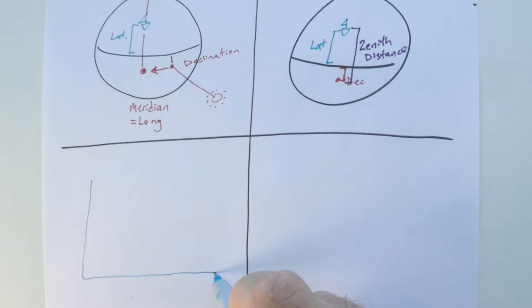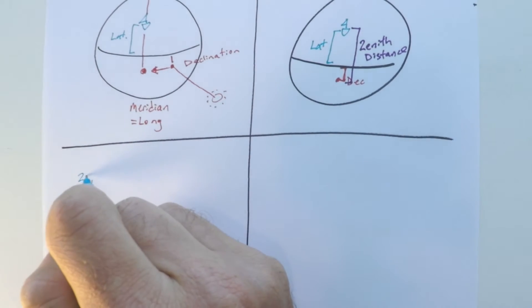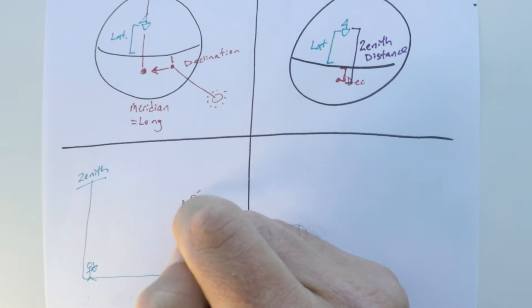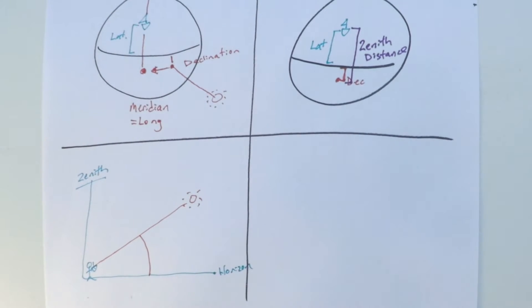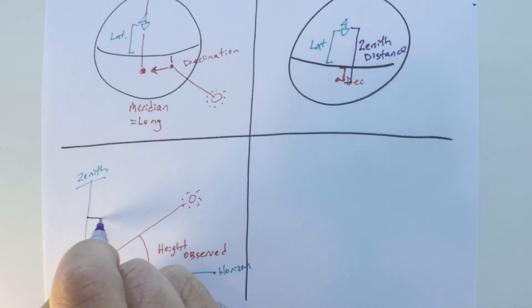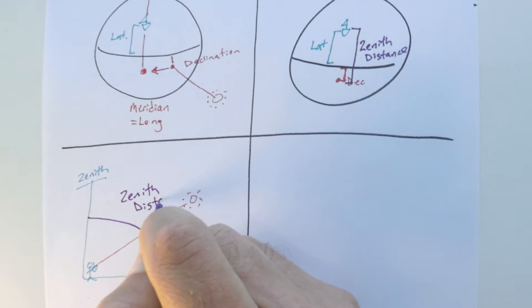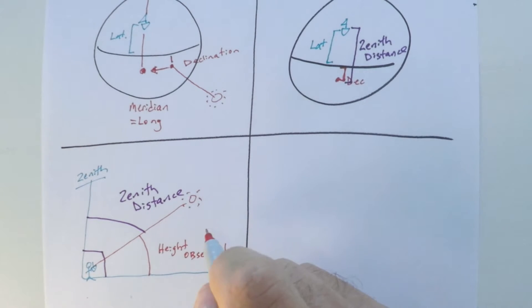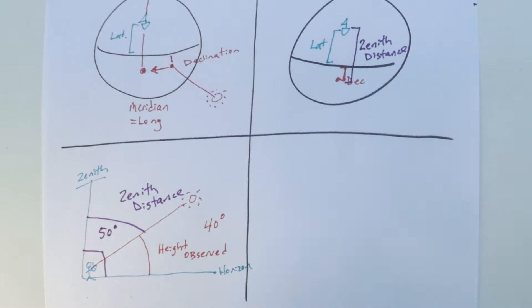So what is zenith distance? Here's you with your sextant — the spot directly over your head is called your zenith. Typically what we do with the sextant is measure the angle from the horizon to the Sun, and that's called our height observed. But if you take the inverse of that angle, that's called zenith distance. That's a fundamental concept in the theory of celestial navigation. If you take the height observed and subtract it from 90 degrees, you get your zenith distance.